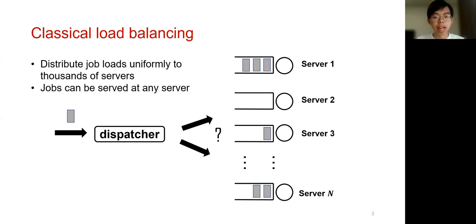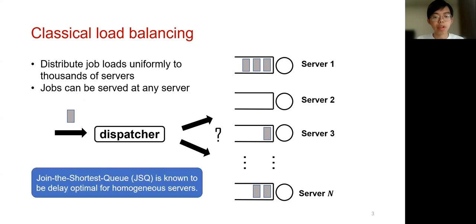Since users are in general impatient and time is just money, one key design goal for load balancing is to obtain very fast response time for jobs. Previously, when jobs were only simple computing tasks, the dispatcher was able to dispatch jobs to any servers. In this case, it has been shown that join the shortest queue is delay optimal for homogeneous servers, that is, all servers are sharing the same computing speed.